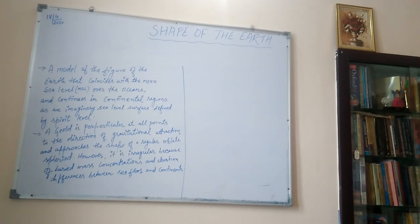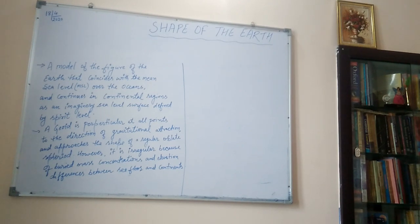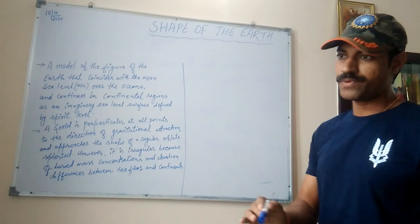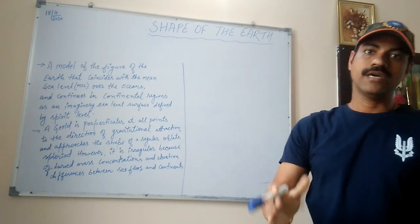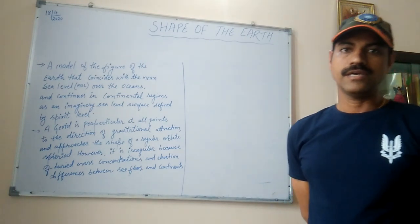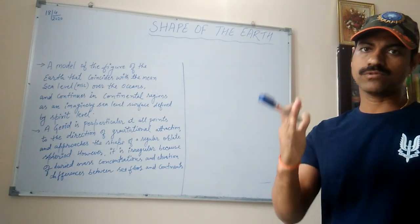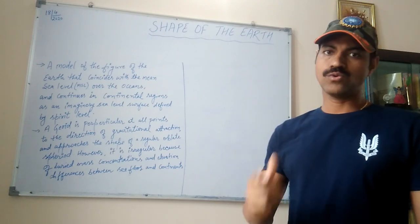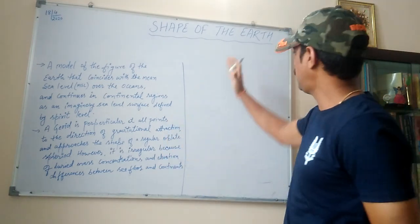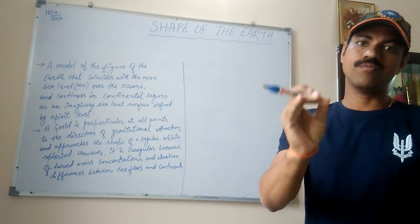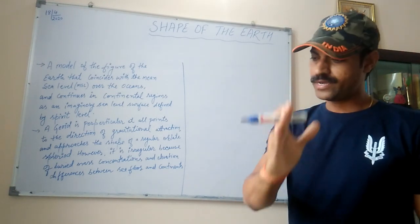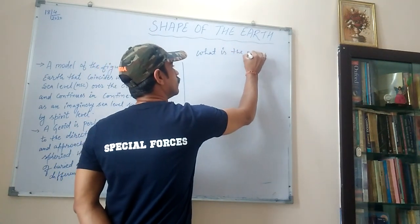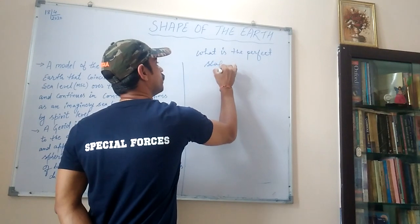Good morning students. Today we are discussing an important topic from social science: the shape of the Earth. In the last class we discussed our Earth's place in the solar system, and today we are discussing the shape of the Earth. The key question is: what is the perfect shape of the Earth?